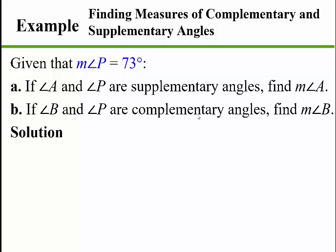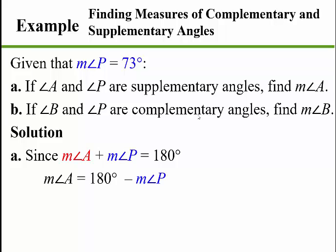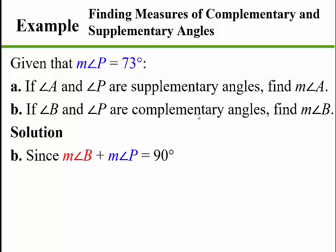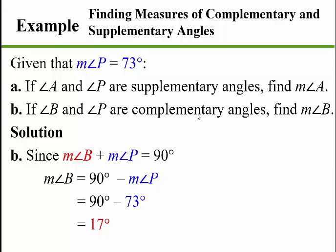Let's find the measures of complementary and supplementary angles. Given that angle P equals 73 degrees: if angles A and P are supplementary, their measures must sum to 180 degrees, so we subtract 73 from 180 to get the measure of angle A equals 107 degrees. If angles B and P are complementary, their measures sum to 90 degrees, so we subtract 73 from 90 to get the measure of angle B equals 17 degrees.